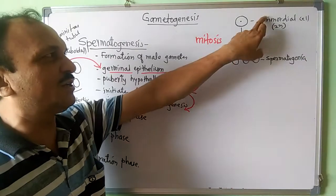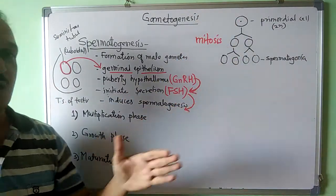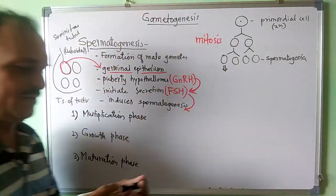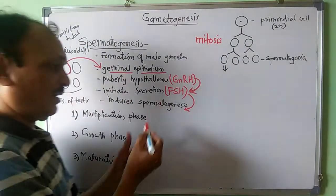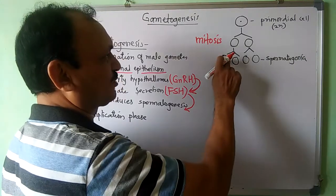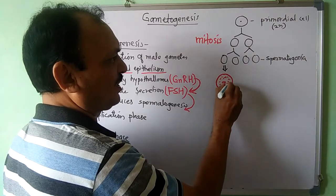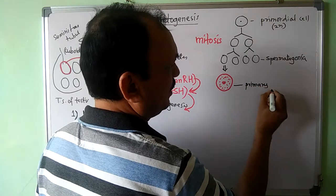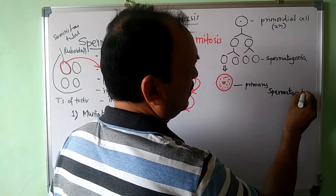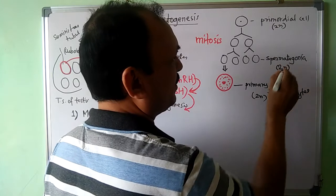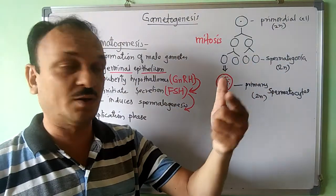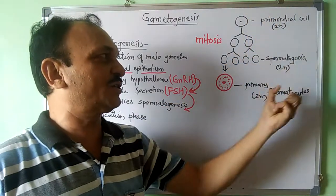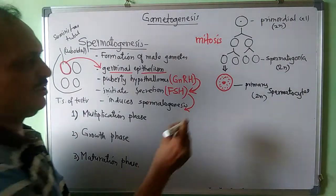The primordial cells on the outer lining of the seminiferous tubule undergo repeated mitotic divisions, giving rise to a large number of spermatogonia. Some of the spermatogonia continue to re-divide while others stop dividing and instead increase their size by accumulation of food material. These enlarged cells are called primary spermatocytes. The spermatogonia are 2n in number since meiosis has not started yet.